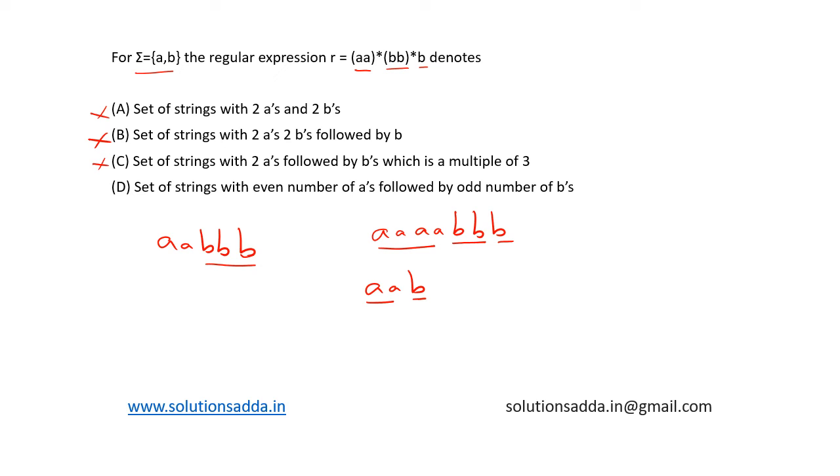Let's see option d. Set of strings with even number of a's followed by odd number of b's. Yes, this is the correct option because here we can generate even number of a's followed by odd number of b's because in the end there is always one odd number of b. Here, it is generating even number of b's. So, ultimately b's would be odd and a's would be even. So, option d is the correct answer here.